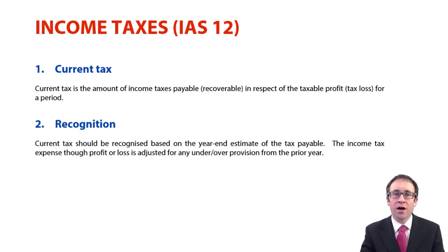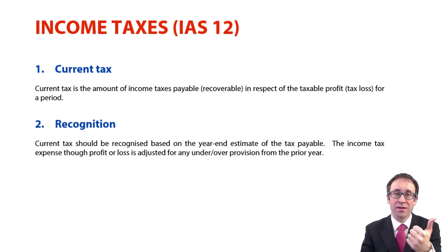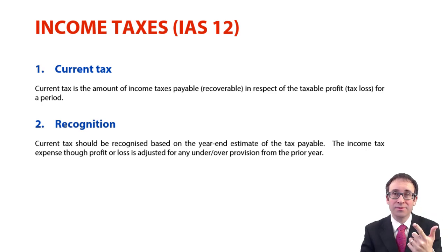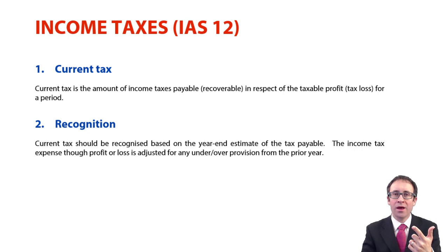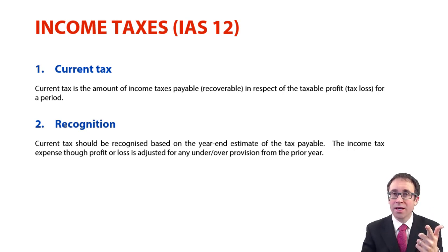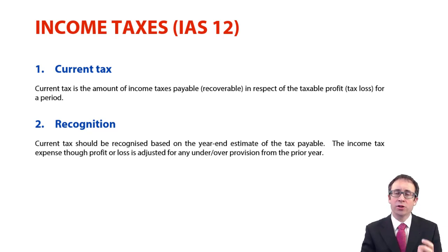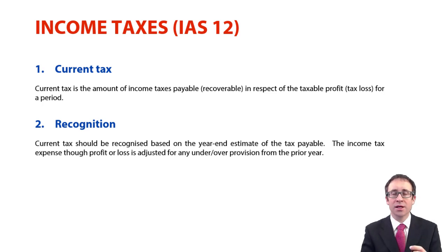There are only two things that are certain in life. One, sadly, is death. And two, maybe even more sadly, is tax. They will both happen at some point in your lifetime. There is no accounting standard dealing with death, but there is an accounting standard dealing with taxes and it's IAS-12. So we're looking at IAS-12 income taxes and how to account for the tax on a company's profits.